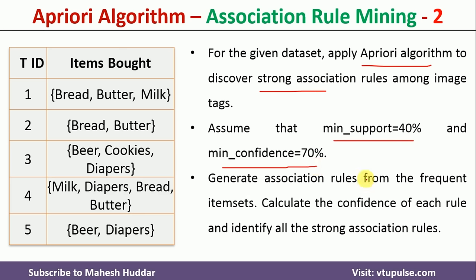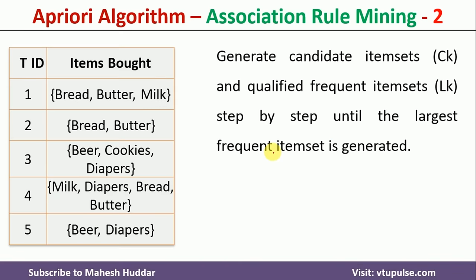First, what we need to do is generate frequent itemsets. Once we generate the frequent itemsets, we can generate the association rules using the minimum confidence. We will generate the frequent itemsets step by step — first generating the itemsets, then finding the qualified frequent itemsets, which are the itemsets having the minimum support.